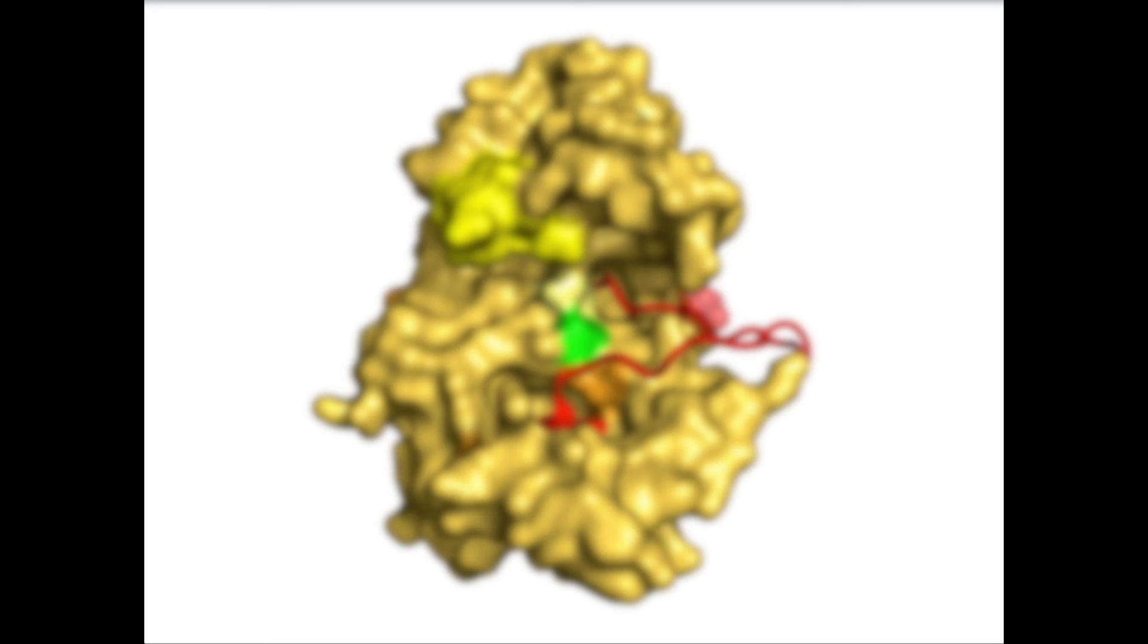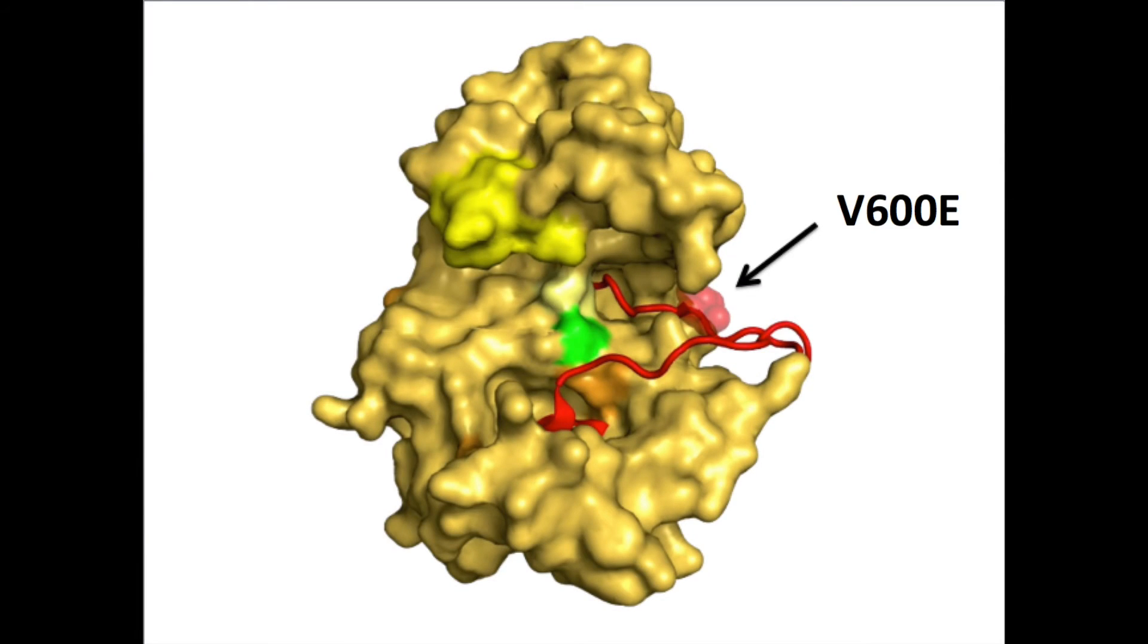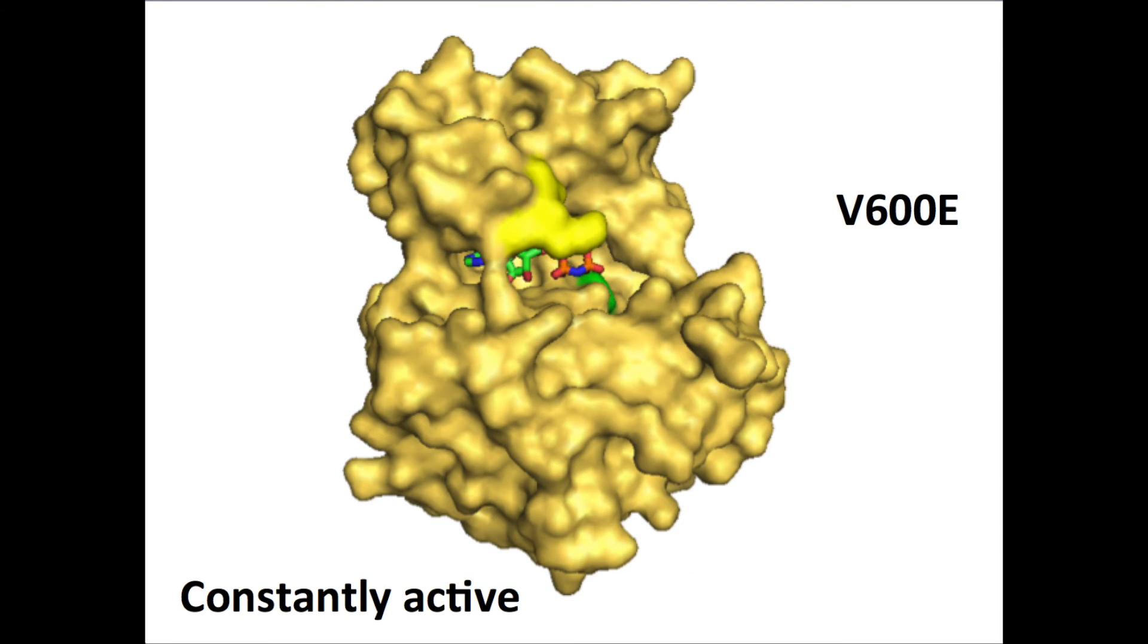Normally, this only happens when BRAF is dimerized. In the mutated BRAF, it doesn't have to get dimerized after binding by RAS in order for it to bind to ATP and MEK. Because BRAF is constantly active, it is called a gain-of-function mutation.